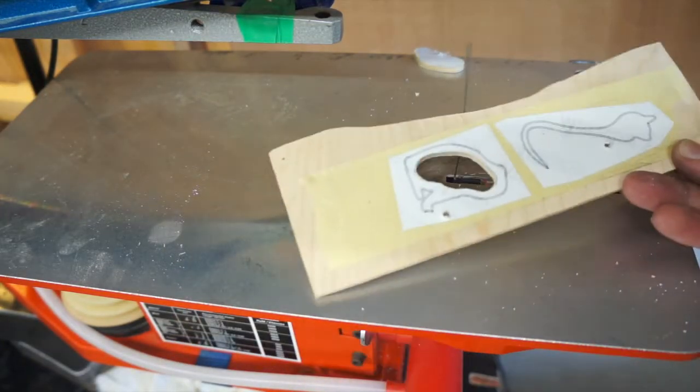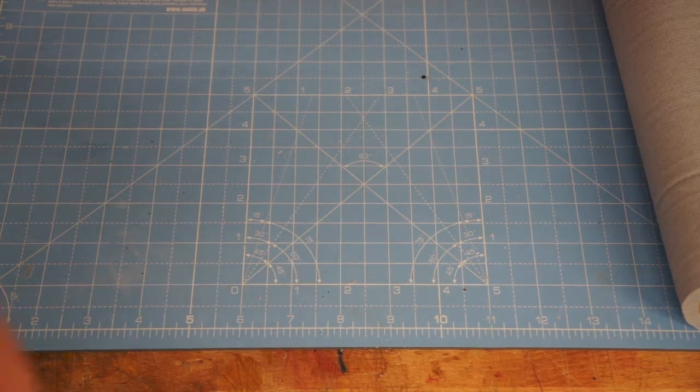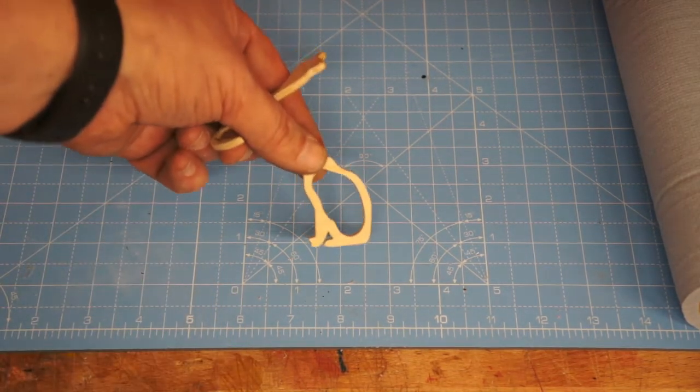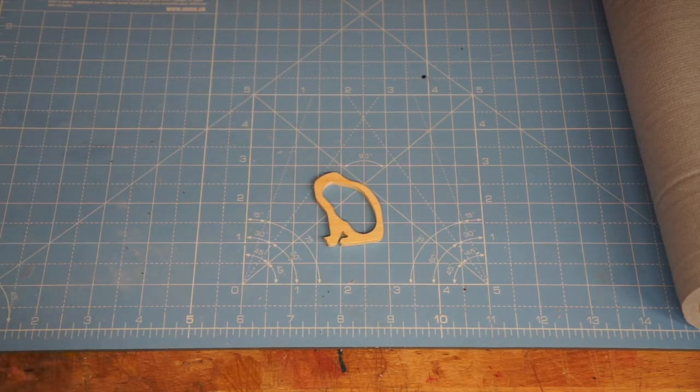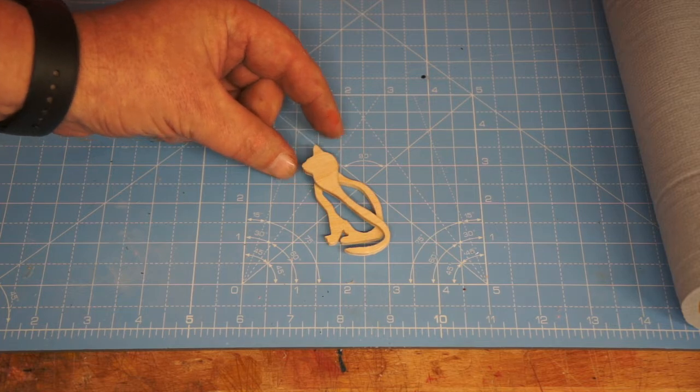Anyway, I'll cut the rest of this out. Okay, so the brooch or pin, pet pin I think they call them, is done. So there's the body and that's the head and the tail.